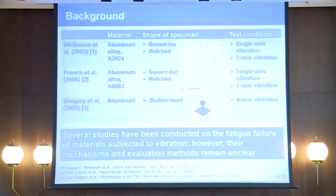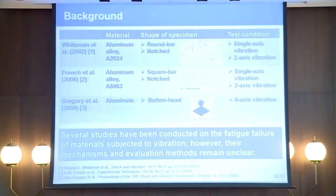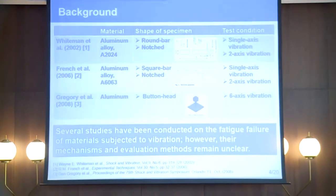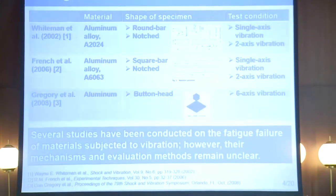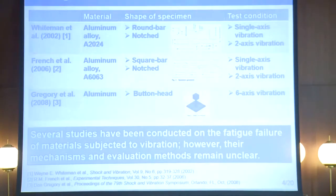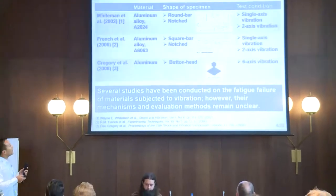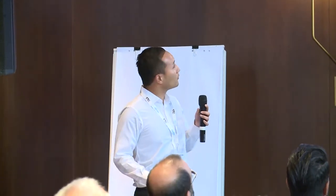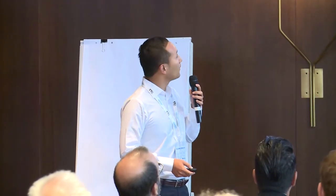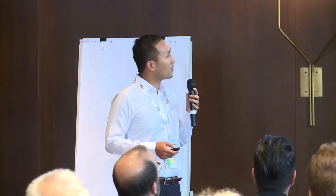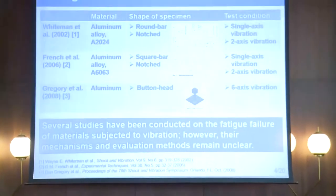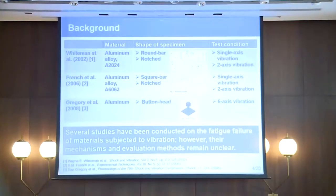Several machines are subjected to vibration — for example, airplanes and automobiles. Several studies have been conducted on the fatigue failure of materials subjected to vibration. Whiteman conducted single-axis and two-axis vibration tests using round-bar notched specimens of aluminum alloy. French also conducted single-axis and two-axis vibration tests using square-bar notched specimens. Gregory et al. conducted six-axis vibration tests using a bottle-head type specimen of aluminum. However, their mechanisms and evaluation methods remain still unclear.